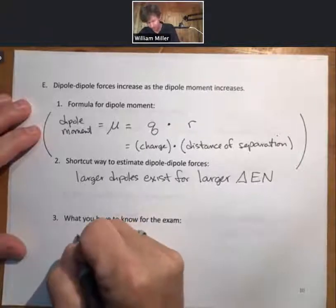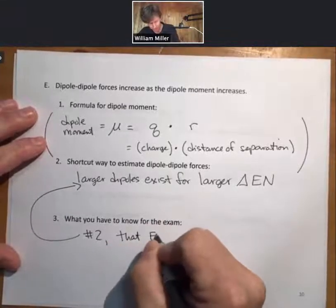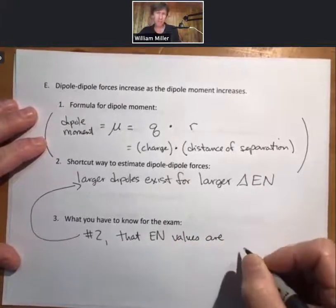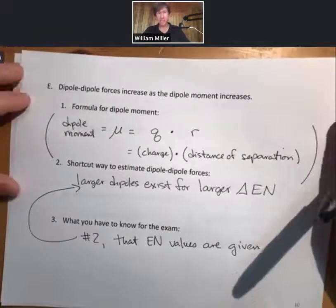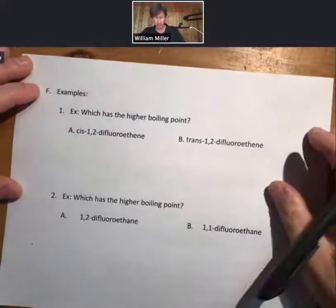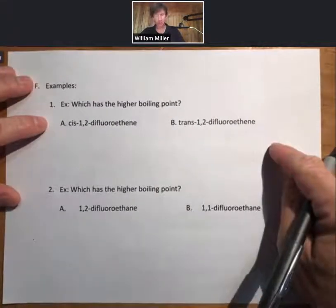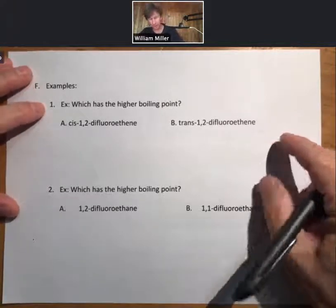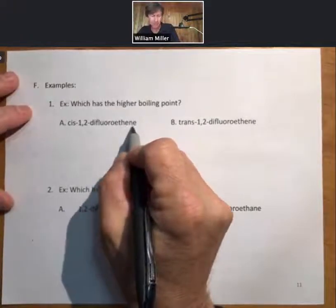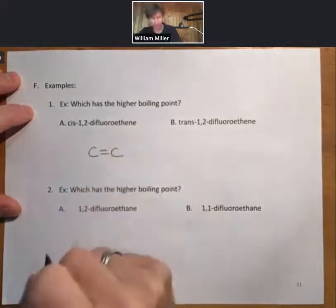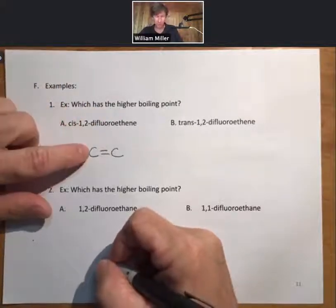Electronegativity values are given when necessary to solve problems, so you can determine ΔEN, the difference in electronegativity. Here are two examples asking which has the higher boiling point. The first molecule has two carbons with a double bond between them — 'EN' means double bond, 'ETH' means two carbons — and 'difluoro' with 1,2 means one fluorine is on each carbon. 'Cis' means the two fluorines are on the same side, and we fill in with hydrogens.